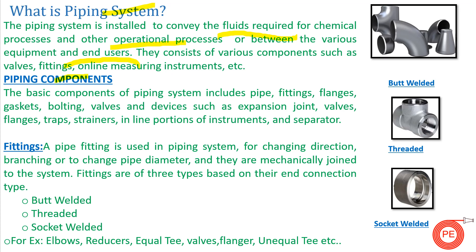The basic components included in a piping system are pipes, fittings, flanges, gaskets, bolting, devices such as expansion joints, valves, flanges, traps, strainers, inline instruments, and separators. When all these things are maintained in a systematic order so that they can convey fluid from one place to another, they form a piping system.